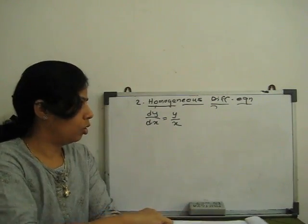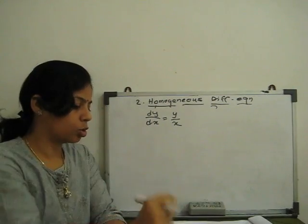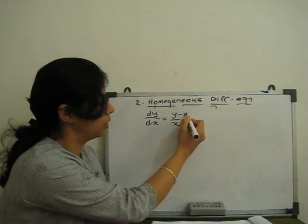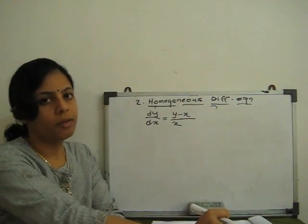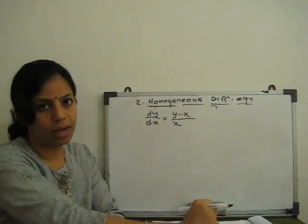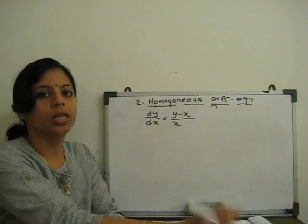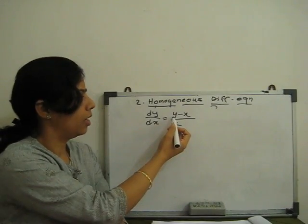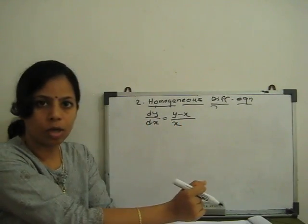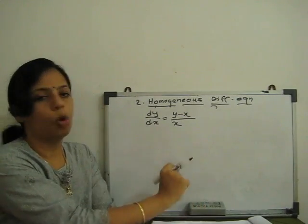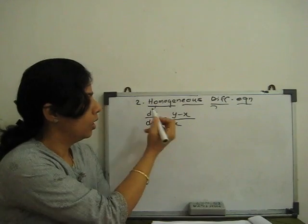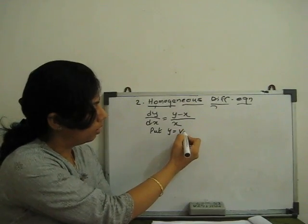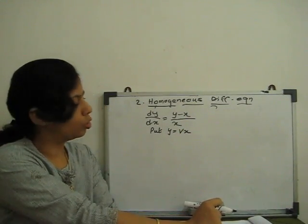So dy/dx is y/x. This is also variable separable, but we can also choose another question like dy/dx = (y − x)/x. Now you see we can try to separate its variables y and x. If we can't, then we use the second method — homogeneous. We check the degrees of all terms: y having power one, x having power one — all terms have power one. This is first order, first degree. So we proceed with homogeneous. In homogeneous, we have to remove y by putting y equal to another variable in terms of x.